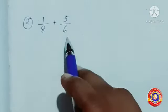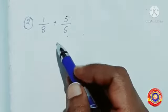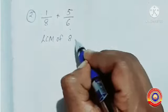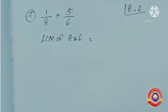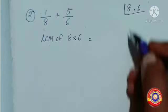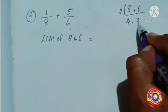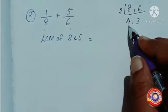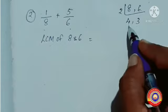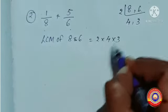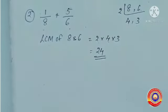Next question: 1 by 8 plus 5 by 6. Here 1 by 8 and 5 by 6 are unlike fractions. We have to convert them into like fractions by finding the LCM of 8 and 6. Both 8 and 6 are divisible by 2: 8 divided by 2 is 4, and 6 divided by 2 is 3. Now 4 and 3 are not divisible by the same number. Then the LCM is 2 into 4 into 3. 2 into 4 is 8, and 8 into 3 is 24. So the LCM is 24.